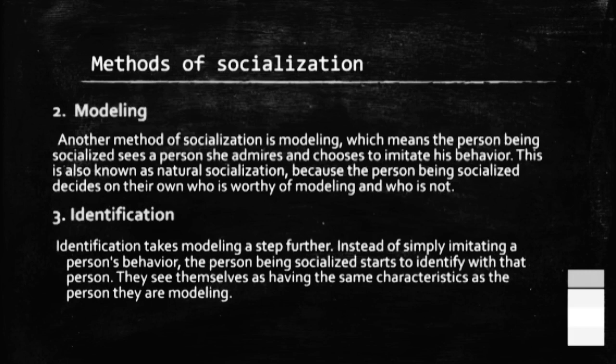Phir hai aapke paas third type — identification. Identification modeling se ek qadam aage hai, matlab ke jab individual — jab aisa individual jisko socialize kiya ja raha hai — wo sirf kisi shakhs ko copy hi na kare, balke wo samjhe ke main khud wo shakhs hun jisko wo admire karta hai. So the individual being socialized identifies himself as that person, adopting their same characteristics.